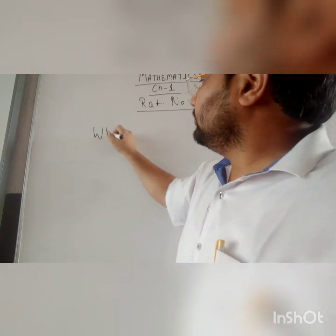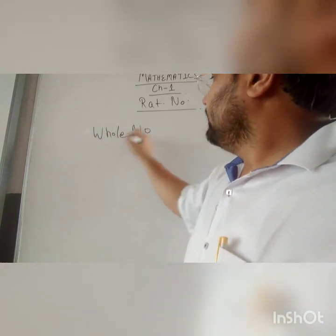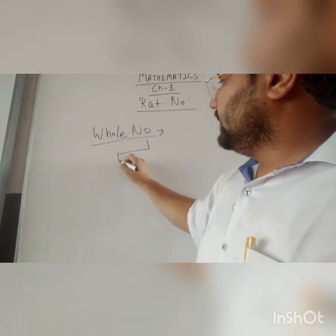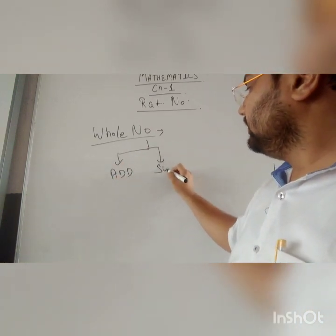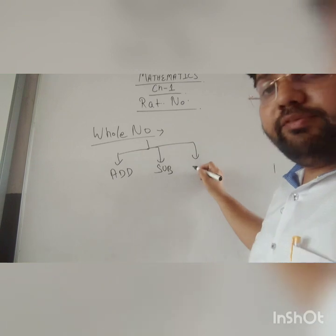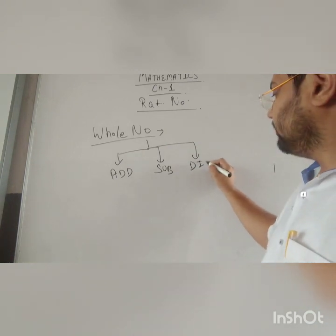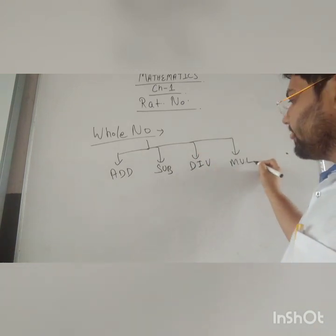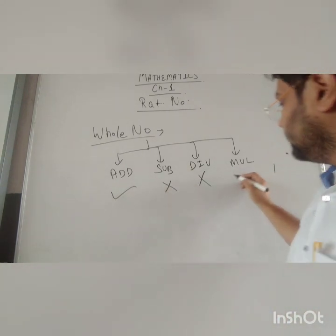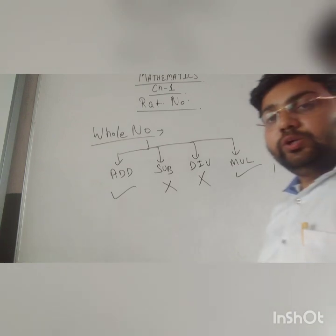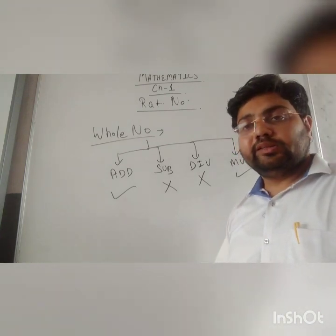If you summarize, in the case of whole numbers - addition, subtraction, division, and multiplication - addition is valid, subtraction not valid, multiplication valid, division not valid. In two cases this is valid, in two cases this is not.